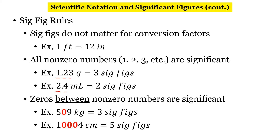The next rule says zeros between non-zero numbers are significant — I call this the sandwich rule. Any zero sandwiched between two non-zero numbers is significant. In the first example, we have a 5 and a 9 as non-zero numbers, and the zero between them counts as a significant digit, giving us three sig figs. In the second example, 1 and 4 are our non-zero numbers, and the three zeros sandwiched between them all count — giving us a total of five significant digits.